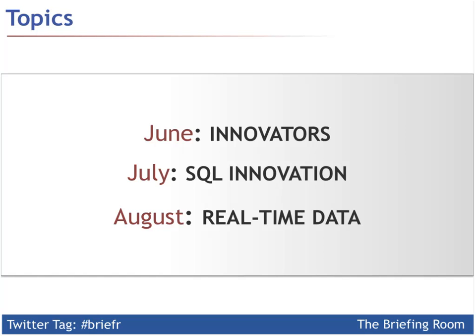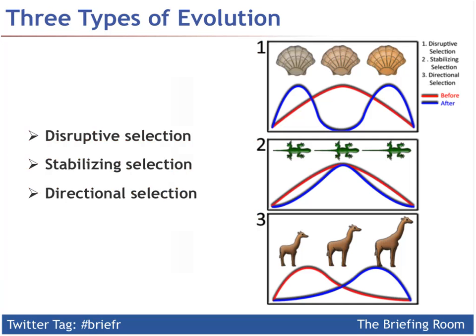Next month you can see SQL innovation and then real-time data in August. It's interesting — we're talking about the evolution of Hadoop. Evolution, in retrospect, can look like a linear process, but really it's not linear at all. Evolution can take any number of paths forward. There are three different types of evolution: disruptive, stabilizing, and directional, and you can create an analog to what we see in the world of Hadoop technology.